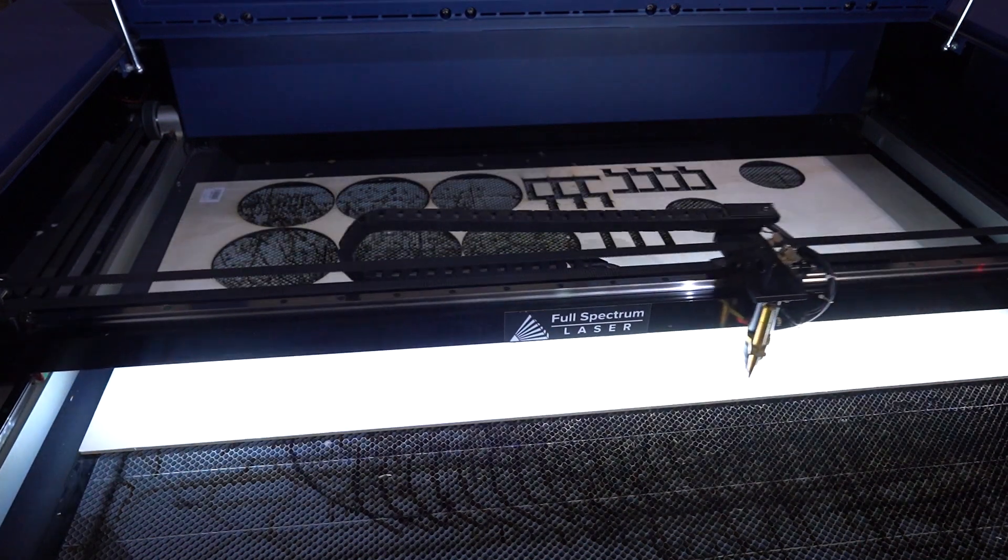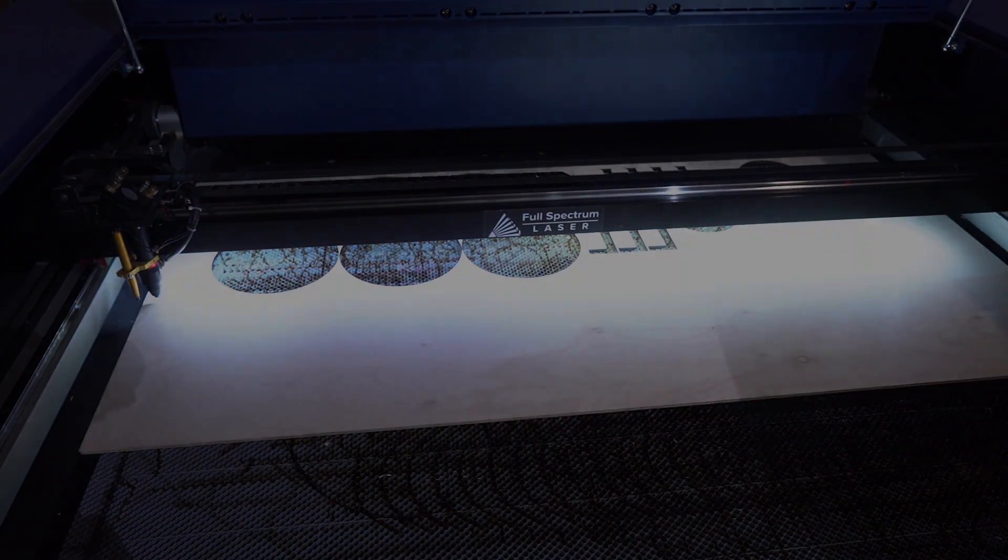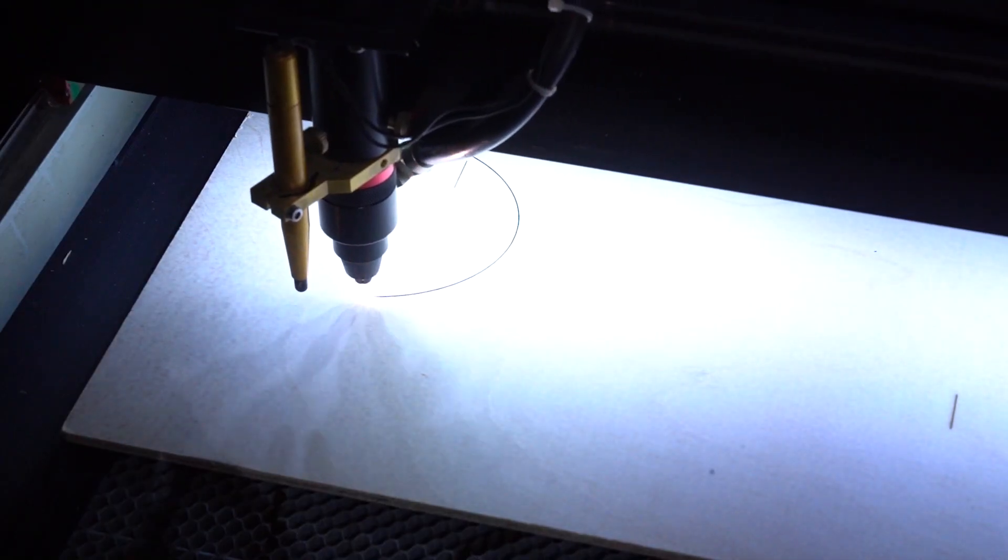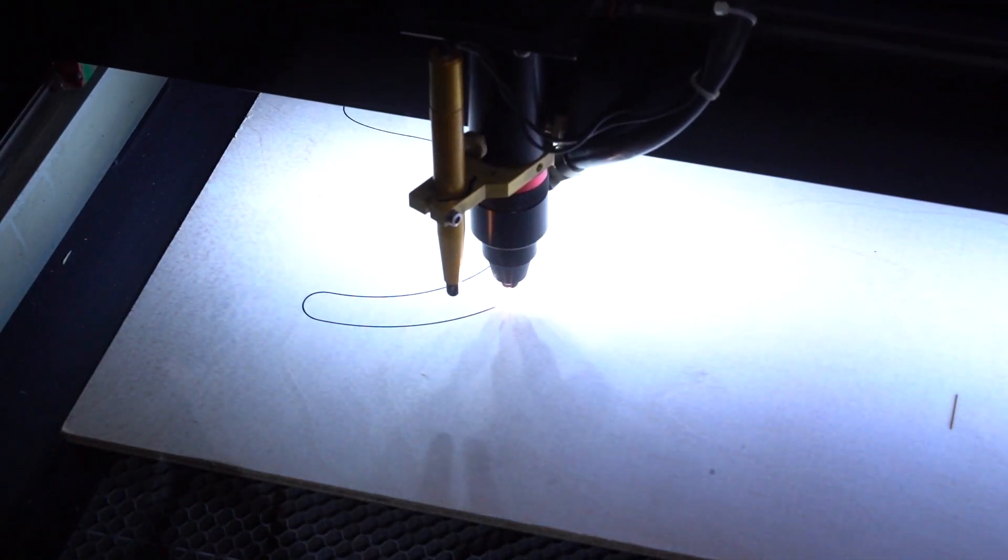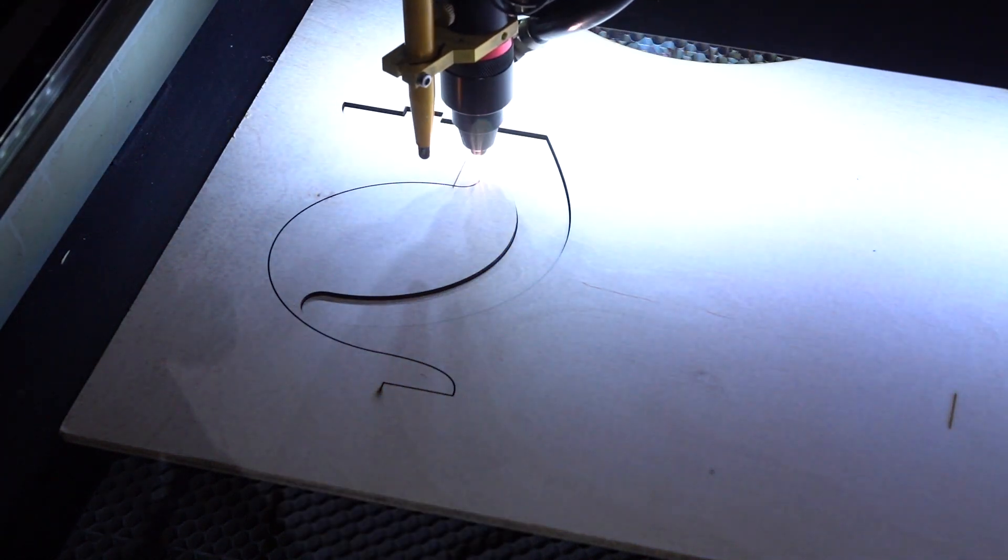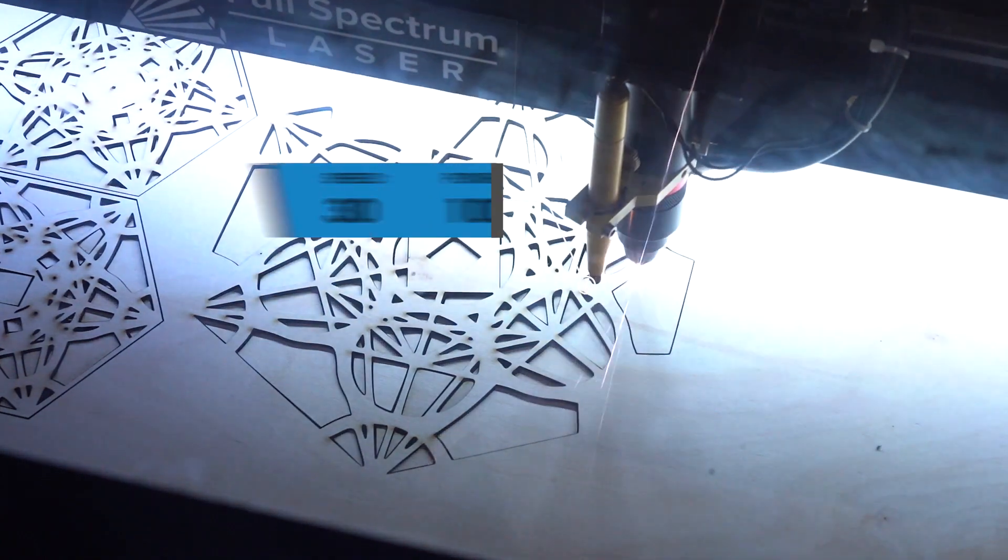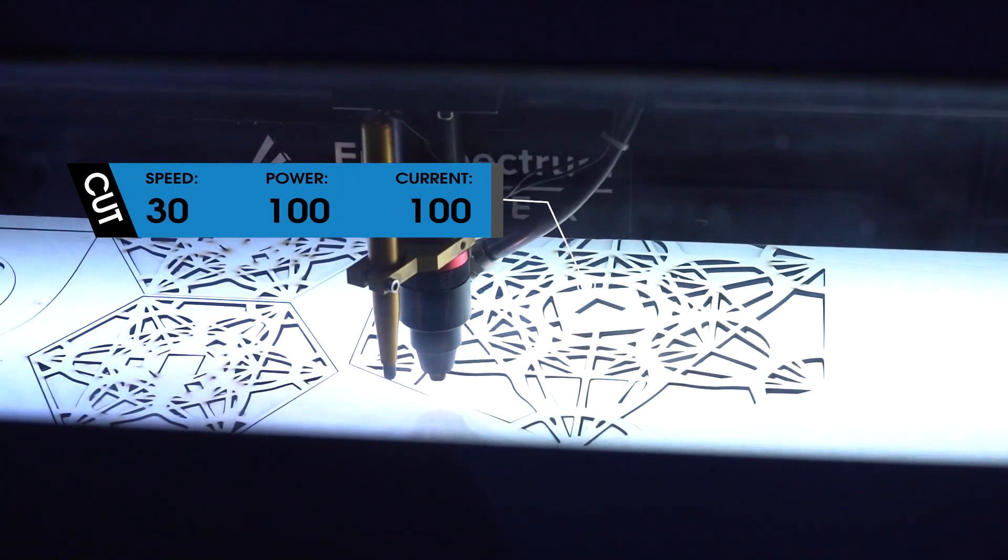First let's start with our wood. This is in our PS48, our 48x36 Pro Series Laser with a 90 watt tube. We're cutting this wood at 100 power and 30 speed.